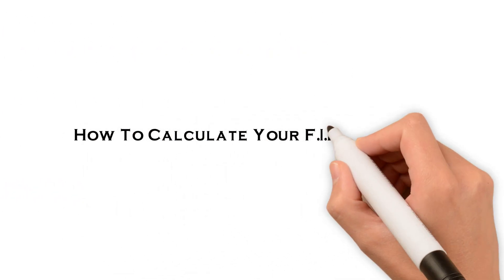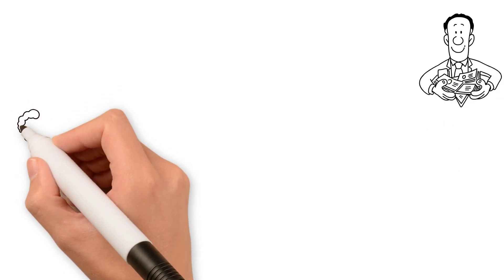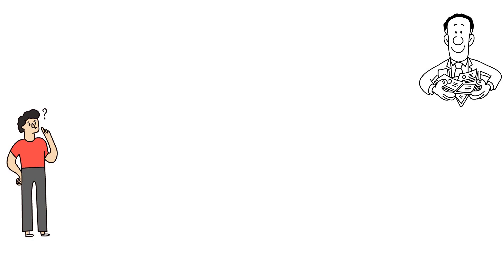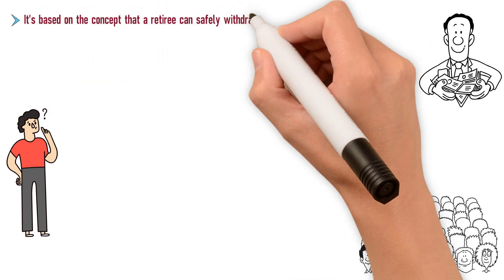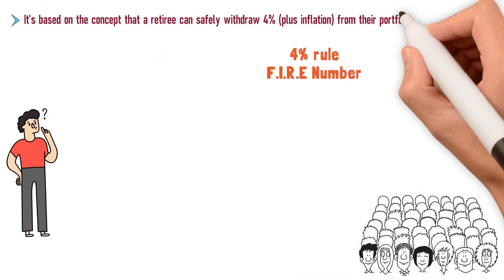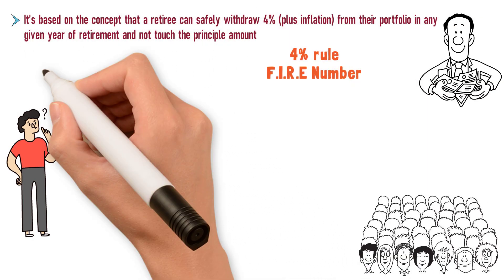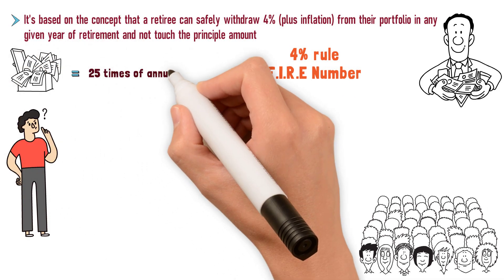How to calculate your FIRE number. Putting away money into savings and investments is great, but you also need to know exactly how much you'll need at retirement based on your current level of expenses. This is referred to as your FIRE number. The amount varies person to person, but there's a general rule to calculating it. It's called the 4% rule. It's based on the concept that a retiree can safely withdraw 4% plus inflation from their portfolio in any given year of retirement, and not touch the principal amount. This means you have to build your nest egg to equal about 25 times your annual spending needs.